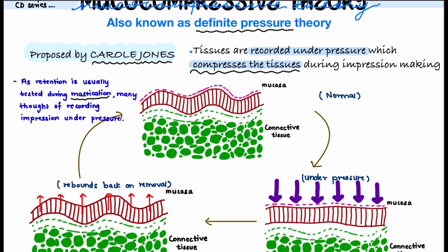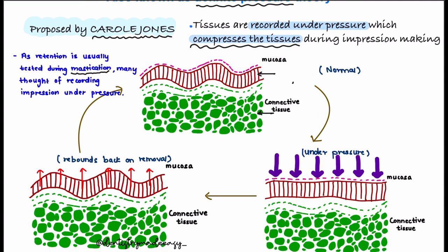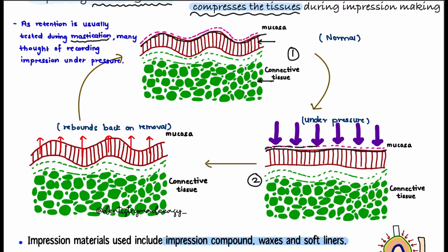Now let's look at what the main problem is with this theory. In the first diagram, the mucosa is at rest. In the second, you can see that when pressure is applied, the tissues are compressed — the mucosa goes from a wavy form to straight under pressure. However, mucosa is not always under pressure; the patient is not chewing for 24 hours. As soon as pressure is removed, the mucosa rebounds back to its normal position.